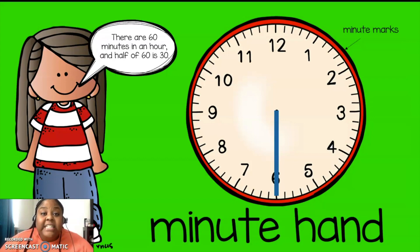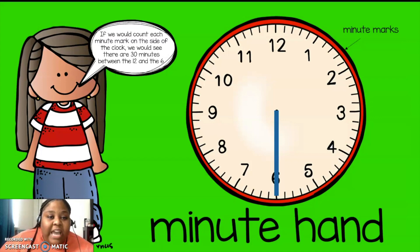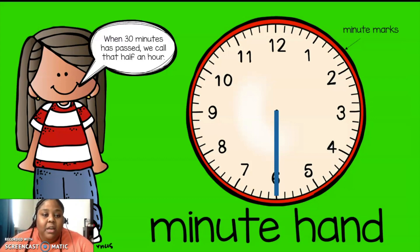There are 60 minutes in an hour, and half of 60 is 30. If we would count each minute mark on the side of the clock, we would see that there are 30 minutes between the 12 and the 6. When 30 minutes has passed, we call that half an hour.